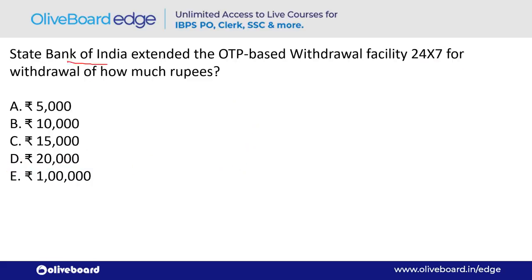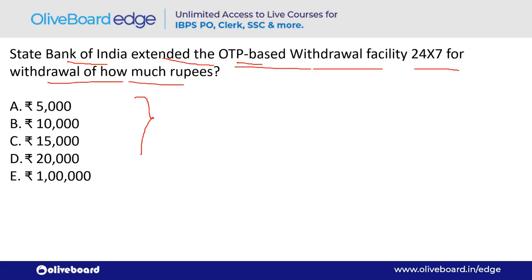State Bank of India extended the OTP-based withdrawal facility 24x7 for how many rupees? The answer is ₹10,000 — option B. SBI's current chairman is Dinesh Khara.